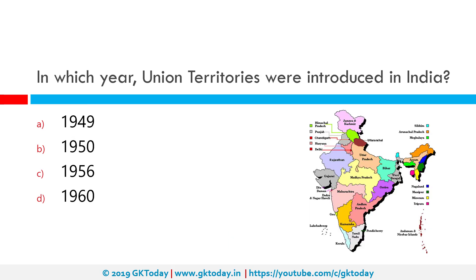In which year were union territories introduced in India? The correct answer is 1956. The reorganization of states on linguistic lines, abolition of class A, B, C, D states, and introduction of union territories was done by the Constitution 7th Amendment Act in 1956.